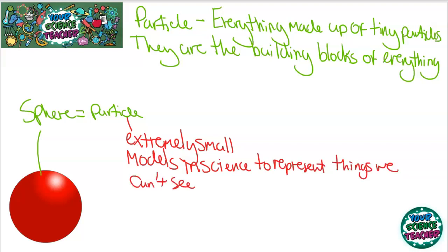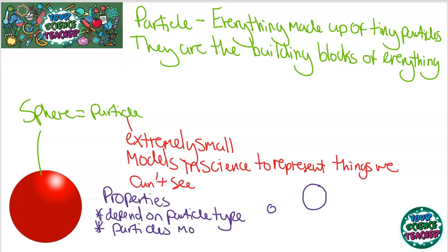Now, the property of each material depends on the particles that it is made of. For example, if the particles are big or if they're small. For example, water particles are quite small, whereas gold particles are a lot bigger. This means that gold is a lot heavier in relation to water. Also, the properties depend on how the particles move, and lastly, how the particles are arranged.